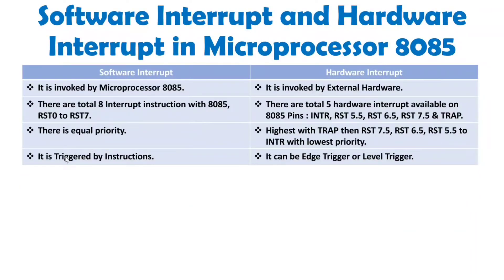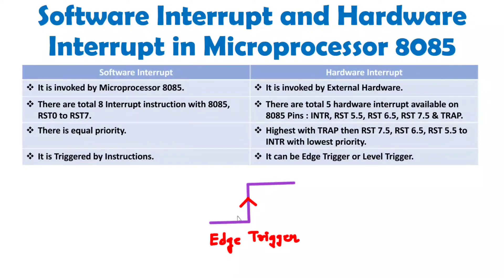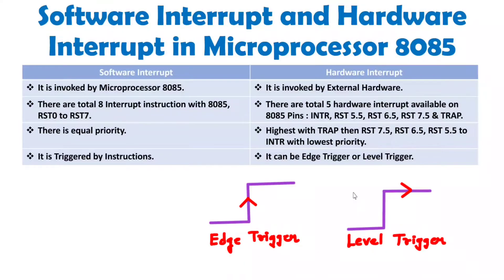For triggering, software interrupt is triggered by instruction execution. Hardware interrupt triggering happens with respect to a signal — that signal may be an edge-trigger signal or a level-trigger signal. Edge trigger means whenever the signal goes from low to high (low-to-high transition). Level trigger means triggering happens when the signal stays high.